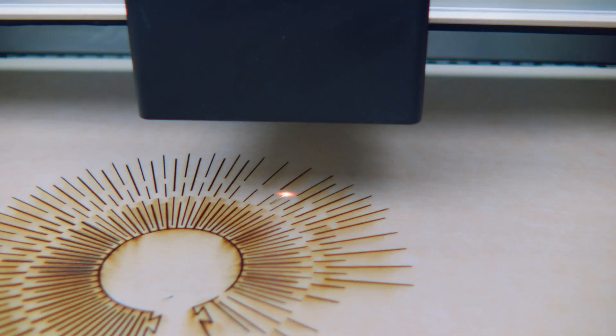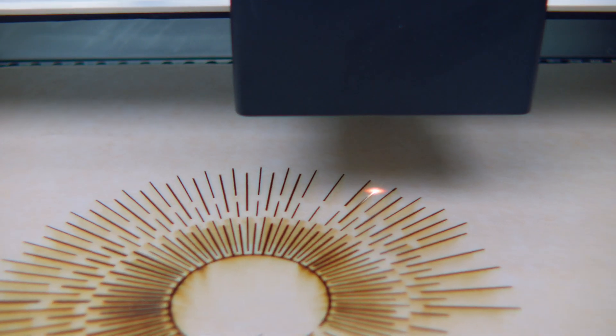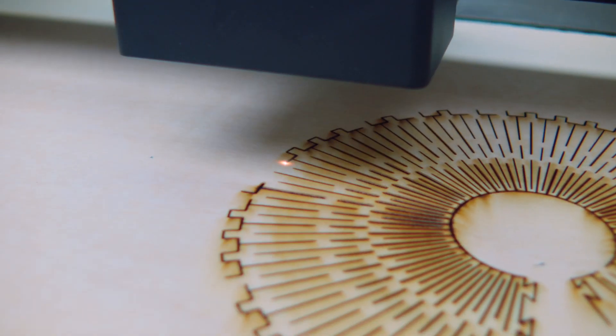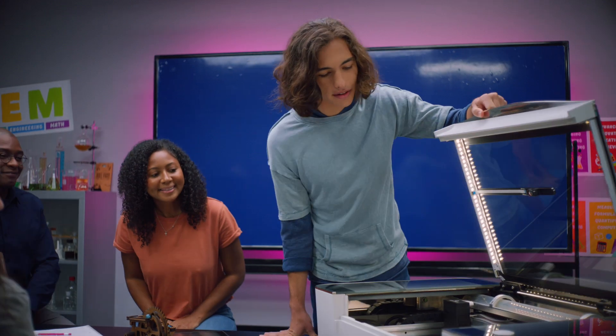Glowforge uses a beam of light, the width of a human hair, to cut and engrave hundreds of materials. It can take on even the smallest of details so you can create projects just the way you want.